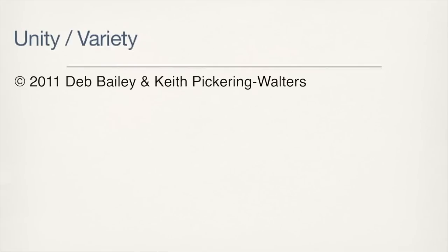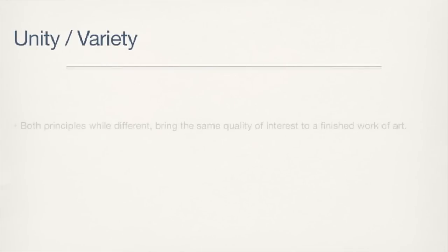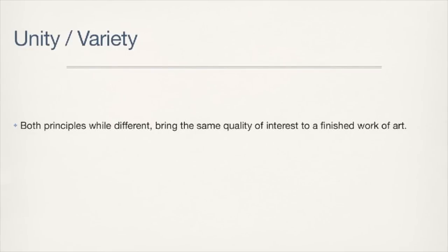The seventh principle has two sides: unity and variety. We find that people have a difficult time understanding their use in photography, so we hope to help you understand it better by looking at some examples. Both principles, while different, bring the same quality of interest to a finished work of art. That is why we list them together.